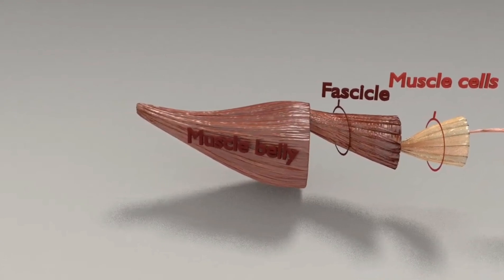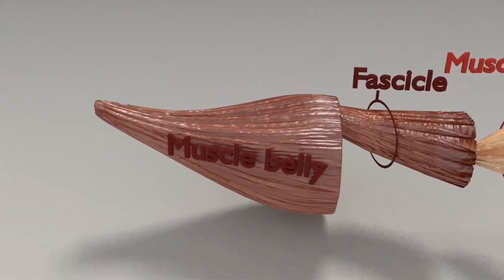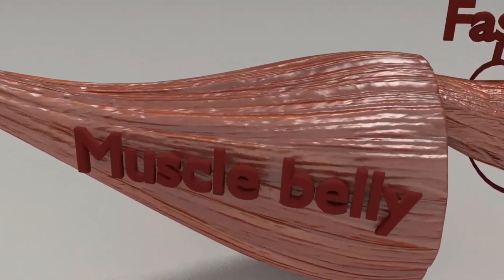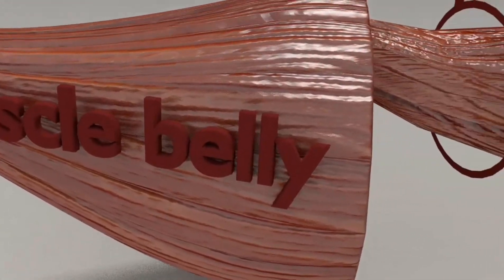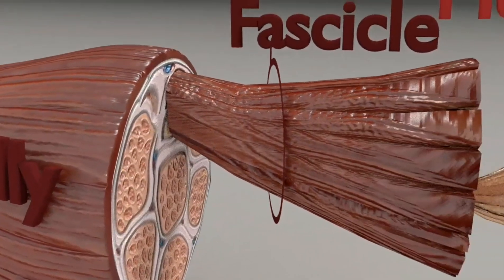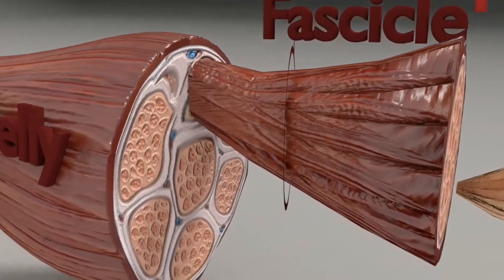Each individual muscle is surrounded by a type of connective tissue or fascia known as epimysium. A single skeletal muscle contains multiple fascicles.